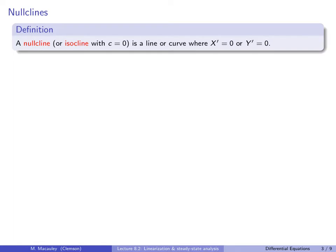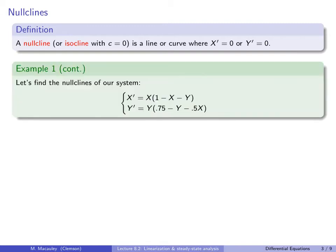Recall from an earlier lecture that an isocline is a line or curve where the derivative is constant. A special case is a nullcline, where the slope is zero. For a system, a nullcline is a curve where either x-prime or y-prime equals zero. Let's find the nullclines for this example and use them to identify steady-state solutions graphically.